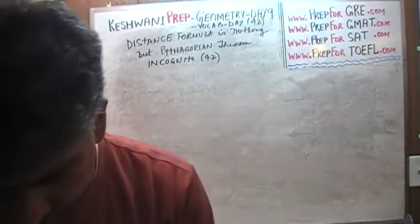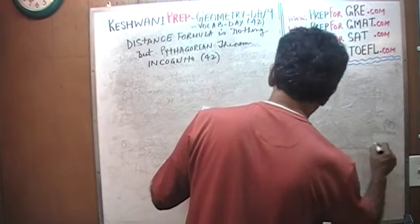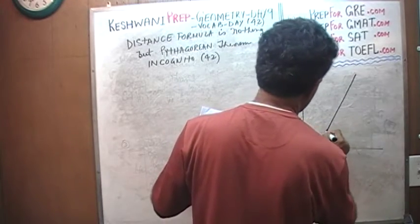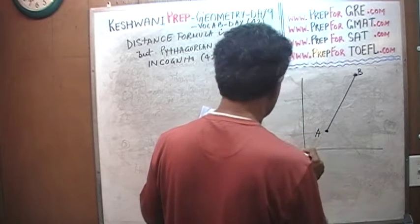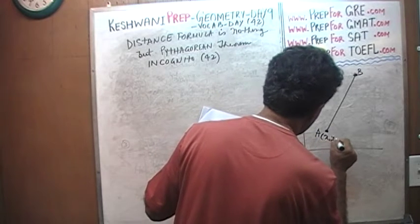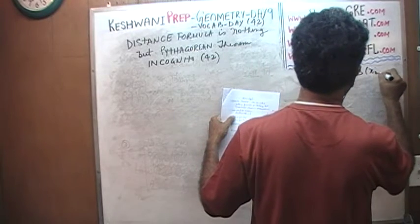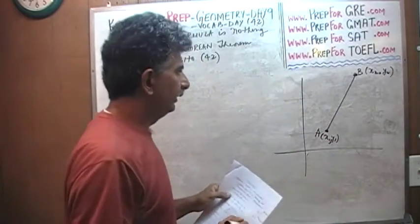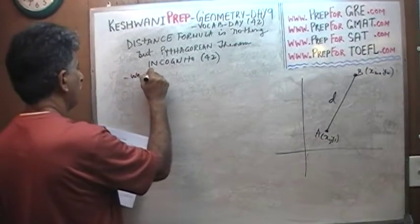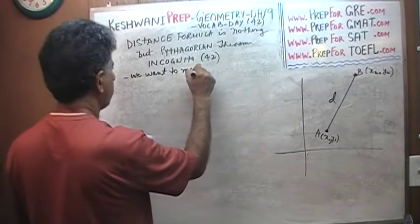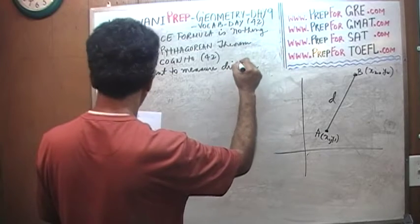I'll explain what I mean by that in a second. Let's take a look at this picture here. We are given a distance from A to B. We are asked to measure the distance from A to B. We are told that A has a coordinate of X1 and Y1, and B has a coordinate of X2 and Y2. The question simply is: how much is this distance A to B? Let's call it D for distance.